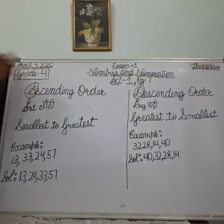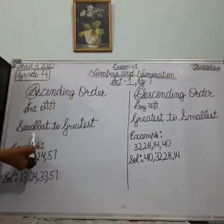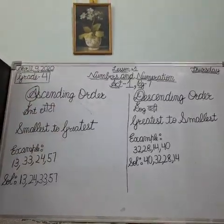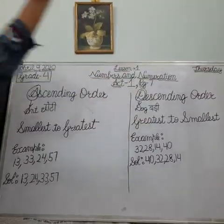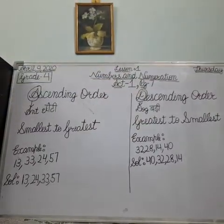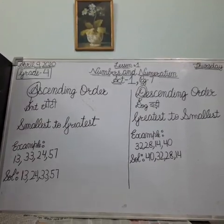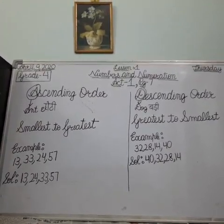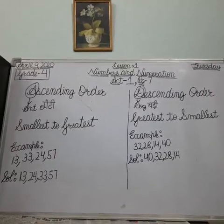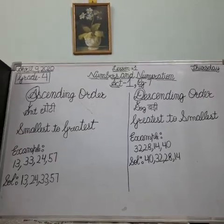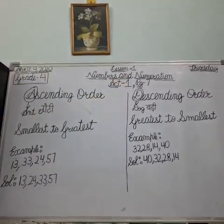Now, what is ascending order? Ascending order means smallest to greatest. What is descending order? Descending order means greatest to smallest. I have a very simple and interesting example, and if you follow that, you will not get confused between ascending and descending order.